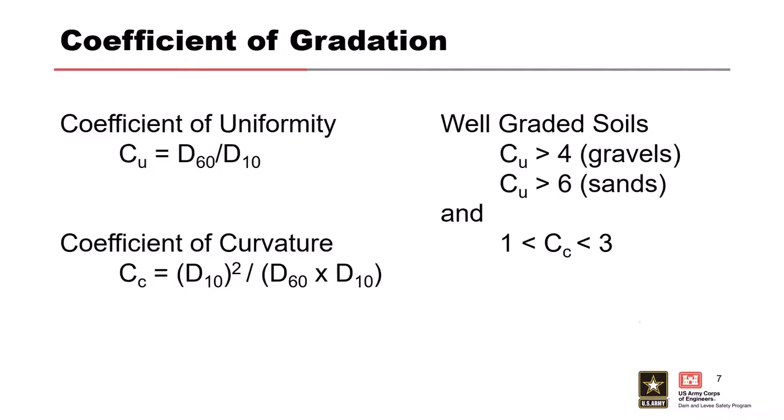For coarse-grain material, we look at the coefficient of uniformity — how uniform the material is — and the coefficient of curvature, which describes the shape of the gradation curve. These will come back when we talk more about USCS classifications.